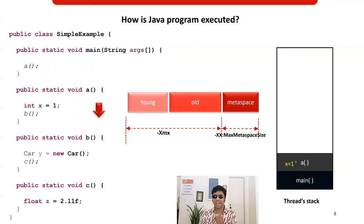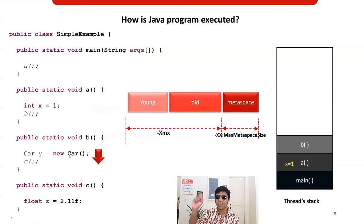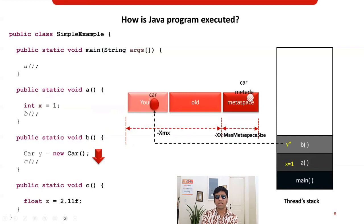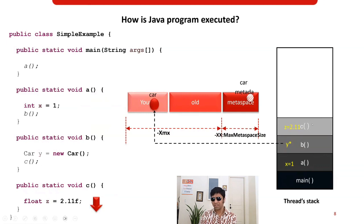The thread then goes on to invoke method B, which is added to the thread stack. The Car object needs to be created — first, the Car class definition (Car.class) is loaded into metaspace. Since Car is a complex data type (an object), the object itself is created in the young generation. The local variable y, which points to the Car object, is a local variable so it is stored in the thread stack itself.